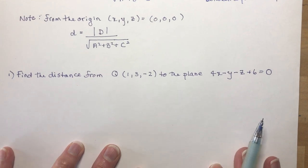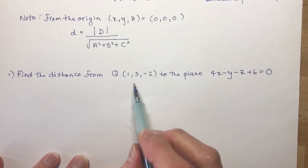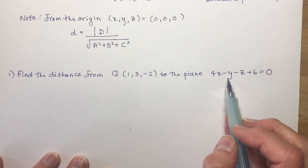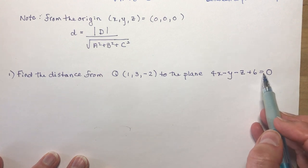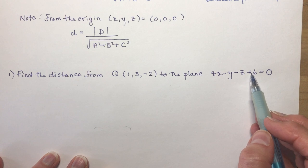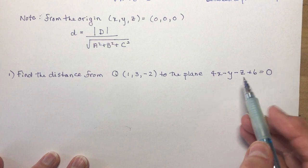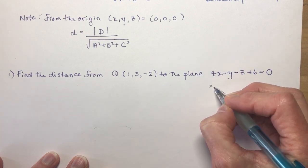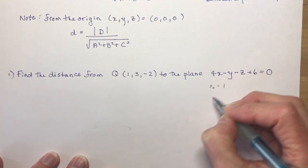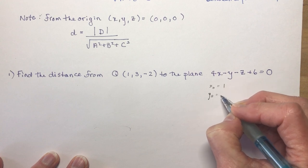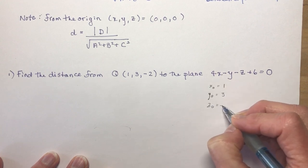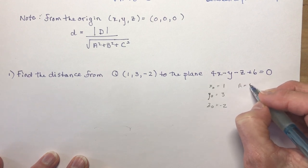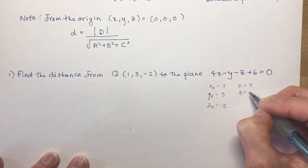Okay, so let's take a look at this one here. It says find the distance from Q(1,3,-2) to this plane 4x - y - z + 6 = 0. And again, remember that you make sure that your D is on this side of the equation or you will have the wrong sign. So I would highly recommend you write out your little what each of the variables are here, what your numbers.